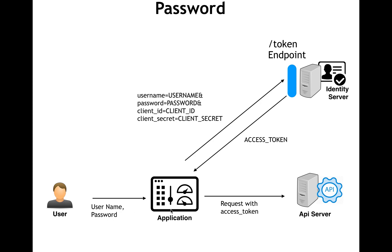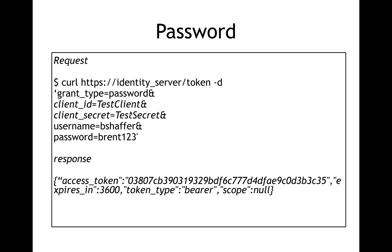With the password grant, the user can give the username and password directly to the application. The application takes this username and password, adds its own secret, and sends it to the identity server. In return it gets an access token, which it uses to communicate with the API. So in this case both are authenticated — the application and the user — but the application should be highly trusted because it is taking the credentials from the user on its behalf. The request includes the client ID, secret, username, and password, and in response you get an access token.